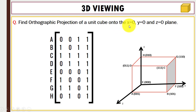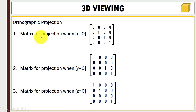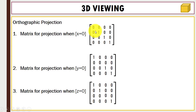Next, we have to find out the orthographic projection for x=0, y=0, and z=0. As you know, in orthographic projection we have a specific projection matrix for each plane: when x=0 this matrix, when y=0 this matrix, and when z=0 this matrix. You can see in this matrix when x=0 the x coordinate becomes zero, and when y=0 the y coordinate is completely zero.